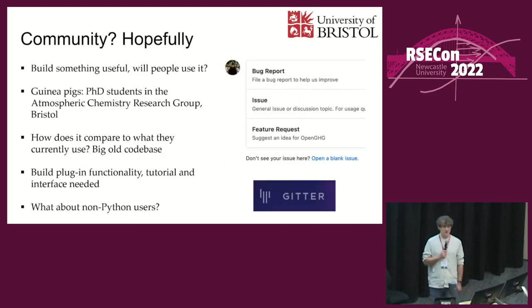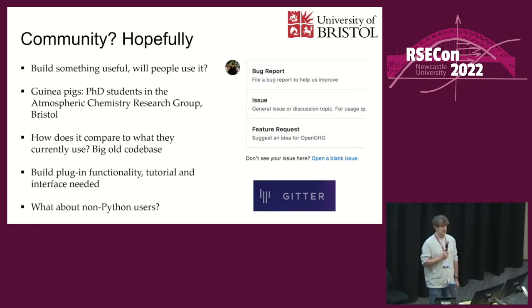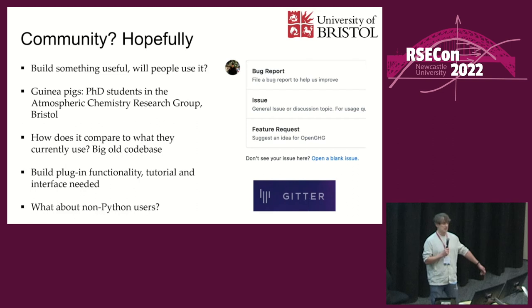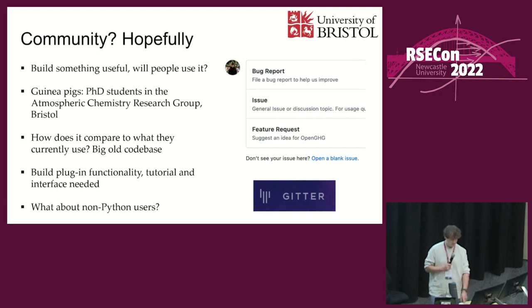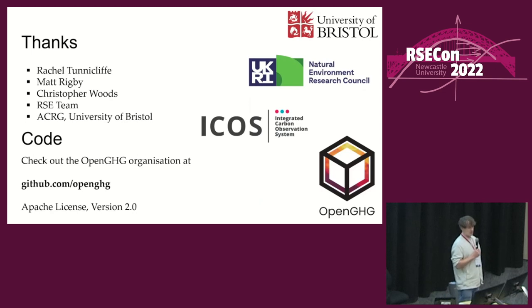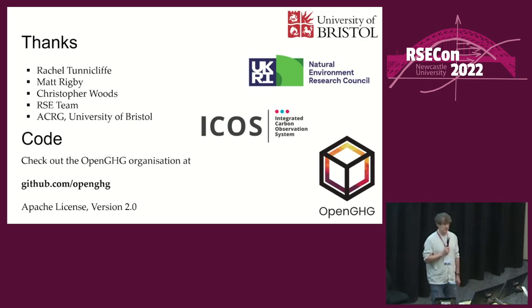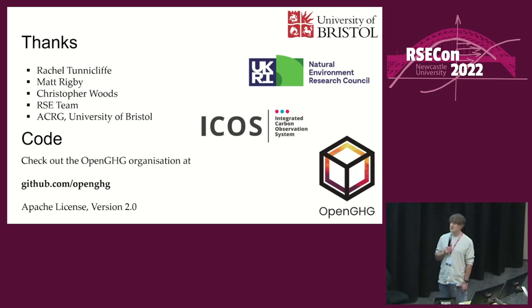Hopefully we'll build a community of different researchers building something useful. We have guinea pigs in the ACRG PhD students - we had a session a while ago that was really good for getting workflows people use and getting them to use OpenGHG. We're looking at how they could move away from the current academic codebase and building plugin functionality so people can add things to the platform more easily, and thinking about non-Python users like R users. I'd like to thank Rachel, Matt, Ruby, Christopher Woods, the RSE team at Bristol, the ACRG, NERC, and the folks at ICOS. Everything is on GitHub at github.com/openghg and is pretty much under the Apache License version 2.